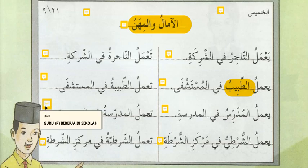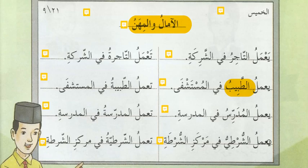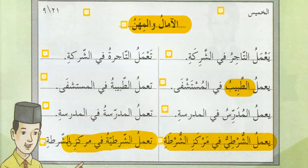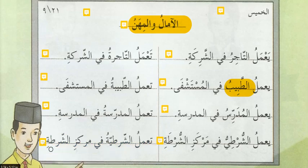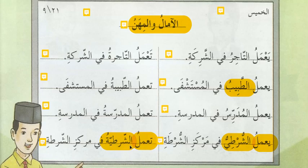Maksudnya guru lelaki bekerja di sekolah, dan guru perempuan bekerja di sekolah. Seterusnya ayat yang terakhir: Ya'amalul suratiyu fi merkezi syuratati. Untuk perempuan: Ta'amalul suratiyatu fi merkezi syuratati. Maksudnya askar lelaki bekerja di kamp tentera, askar perempuan bekerja di kamp tentera. Perbezaannya: ya'amalul muzakar — asyuratiyu; ta'amalul mu'annas — asyuratiyatu.